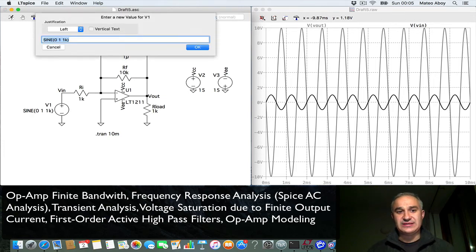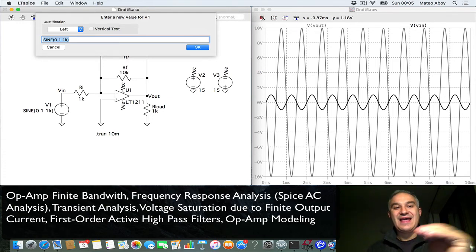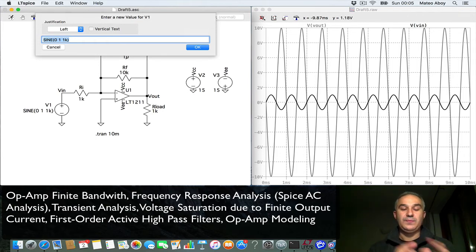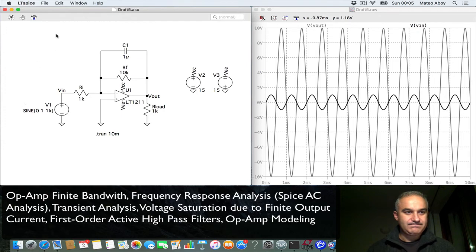And what is the cutoff frequency in this case? It's given by 1 over 2 pi R C. So you multiply, at f, 10k times 1 microfarad times 2 pi, 1 over that is the cutoff frequency. So I'm going to put here a gain of, actually, let's do this. Let's run it. And what are we going to see?